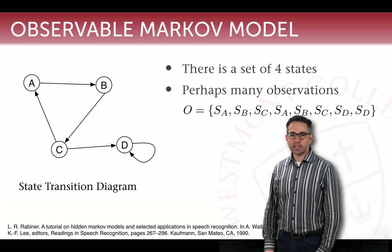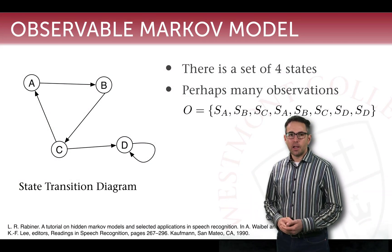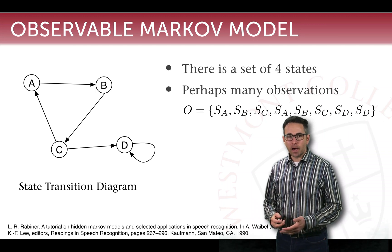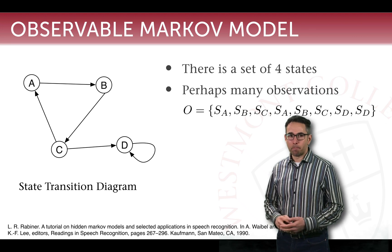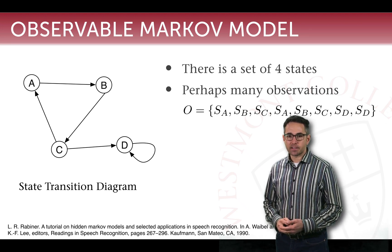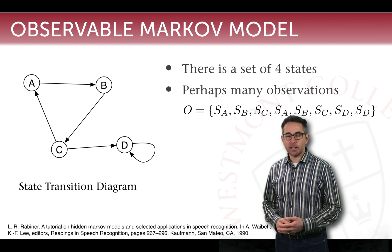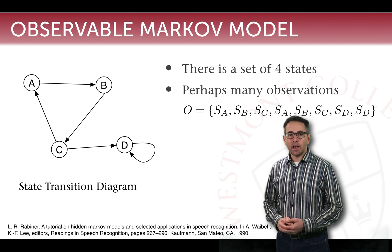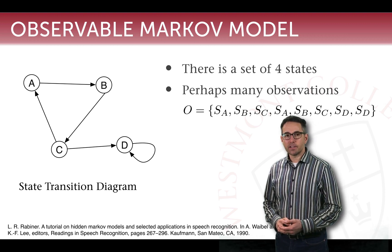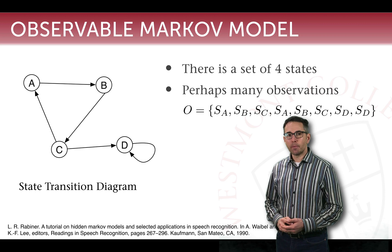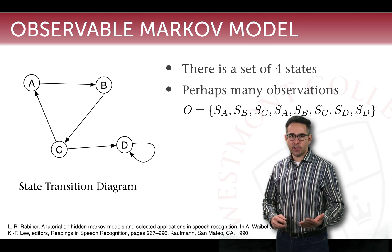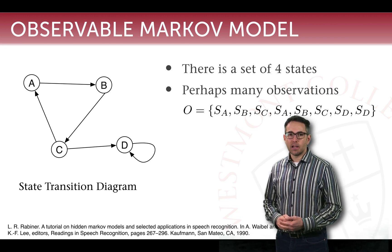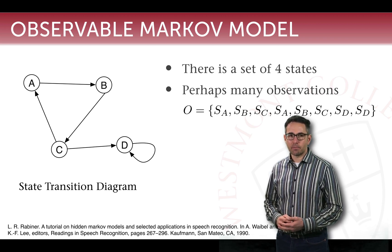When we last left off, we were talking about the observable markup model. An observable markup model is notable because of the different parameters required to define it. One of those parameters is the set of states — in this example the state transition diagram has four states. Another required parameter is the state transition probability: given that you're in one state, what's the probability that you're going to move to another state? A state transition diagram has those probabilities built in by the arrows.